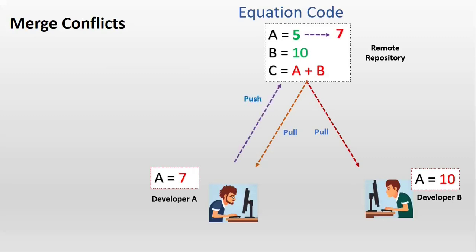So in the remote branch, the A value has been replaced with 7. Developer B has not yet merged his local development branch changes with local master. So when he checked the status of the remote repository to see if there are any latest changes, he saw there is one change made by developer A and there is a new commit for that.